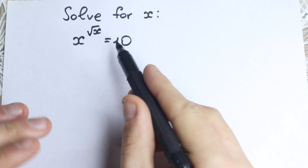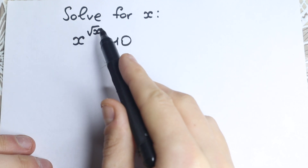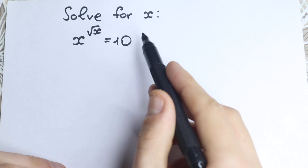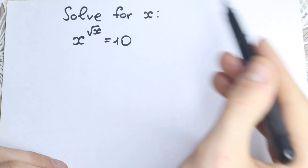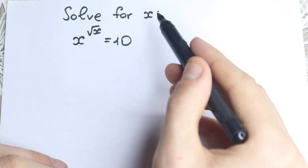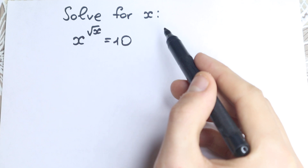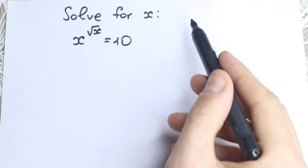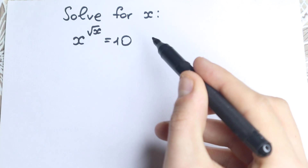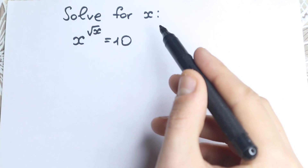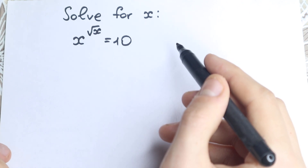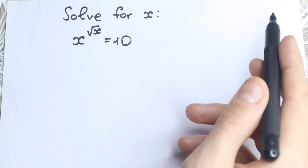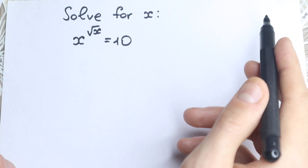On the first glance this looks like an easy question because we only have x, a square root, and 10 — not some huge expression with 10th or 12th powers. But it's not actually easy, because we need to know some really interesting tricks that I'm going to show you. We'll solve this question in just one minute. So let's start.